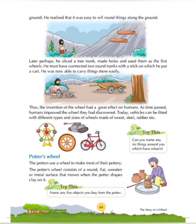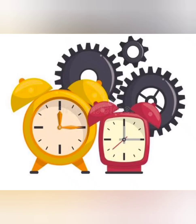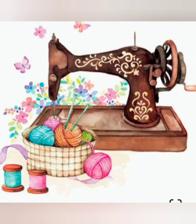Next, can you name six things around you which have wheels? Here you can see a suitcase. We are able to easily move these heavy suitcases because of the wheels which are fitted at the bottom. The clocks and watches also work with the help of wheels. There are several small wheels fitted inside these watches and clocks, which move on battery and thus move the hands of the watch. Next is a sewing machine. There is a handle at the right hand side attached to a wheel. When we rotate this handle, the wheel also moves and this movement results in the process of stitching by the needle.